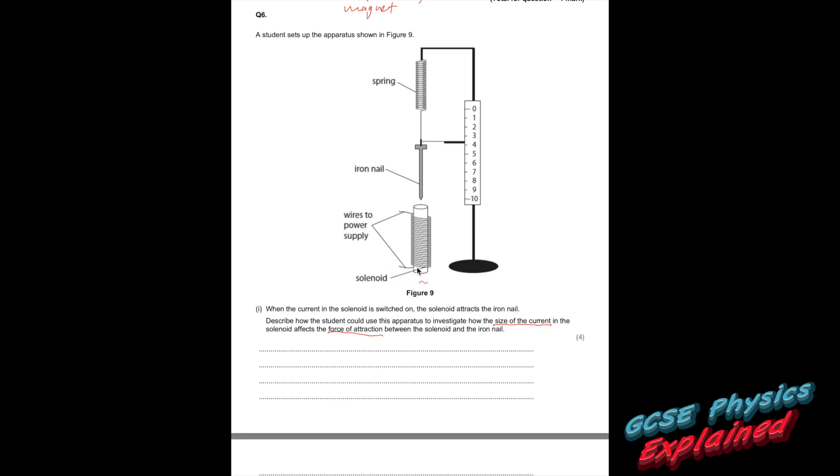Describe how the student could use this apparatus to investigate how the size of the current in the solenoid affects the force of attraction between the solenoid and the iron nail. So basically, if you put a current into that coil, the coil's going to become magnetic, and it's going to attract the iron nail down. Now, the iron nail's connected to this pointer, which is on this scale. So, if we have some way to measure how much current's going in, and we'll make it a small current at first,